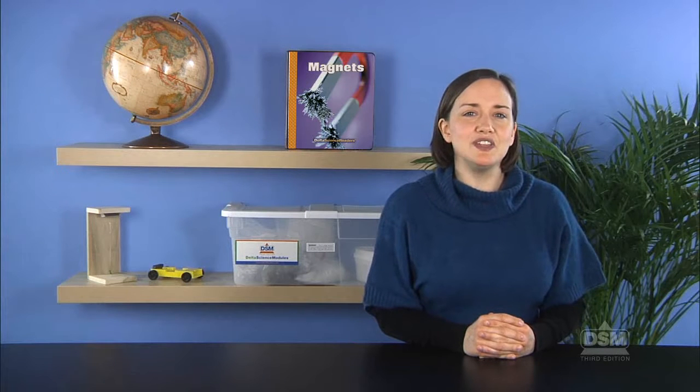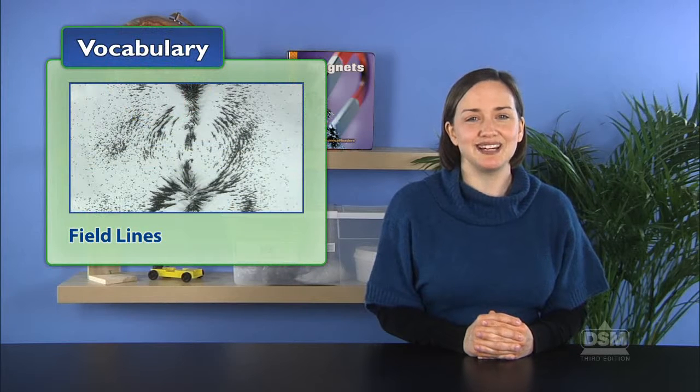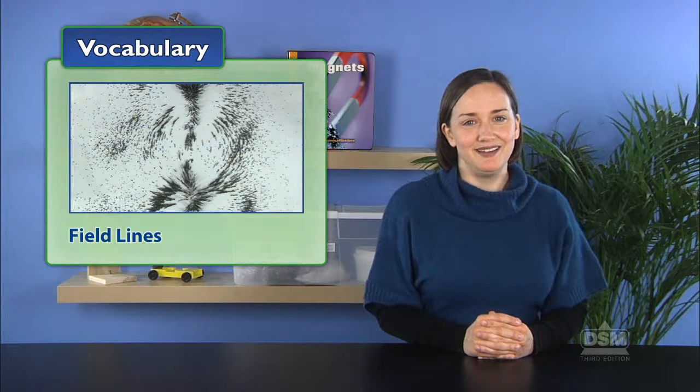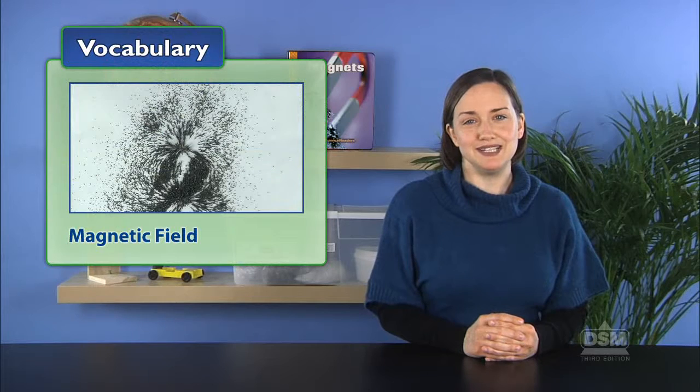Explain that what they have sketched is a picture of the invisible field lines that surround the magnet and show where its magnetic force can be felt. Define magnetic field as the area around a magnet where the magnet's field lines can be detected.